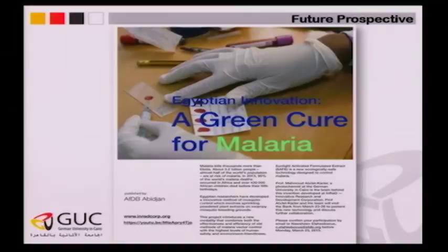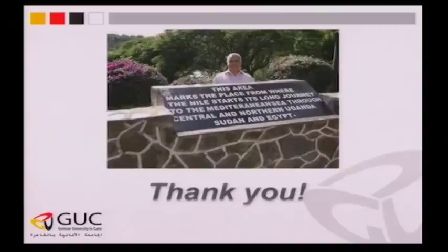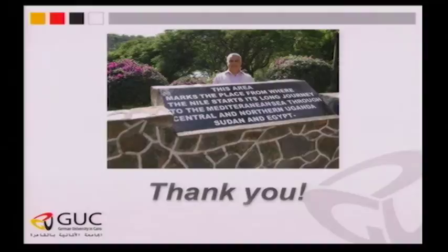The acknowledgement to my co-workers — without them I couldn't tell you any of these stories. This is the Nile, which started this long journey from the Mediterranean through central and northern Sudan to Egypt. This place here is Lake Victoria in Uganda, and the water comes from there — that is the zero point. To reach Alexandria and Cairo it needs about three months. Thank you for your attention.